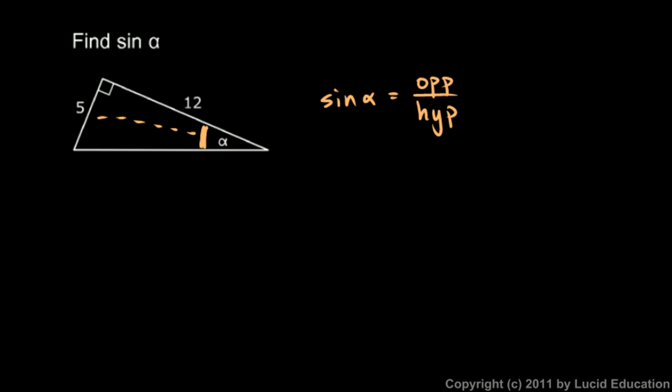So what side is opposite alpha? Well, if we start at alpha and go across, it's this side over here: 5. So the sine of alpha is 5 over... and the hypotenuse - what's the hypotenuse down here?